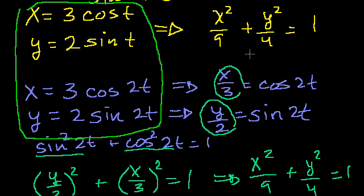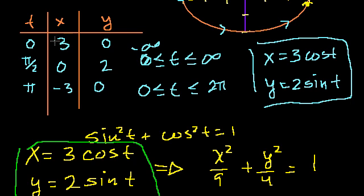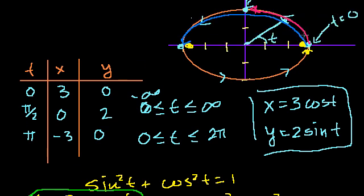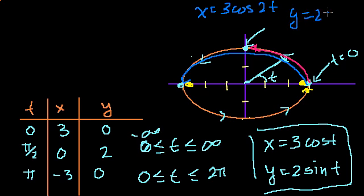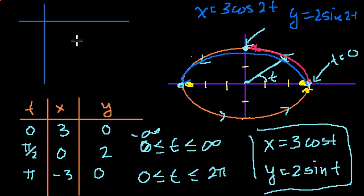So how are they different? In the previous video, we took the original equations and made a table, plotting the points hit as you go around the ellipse. Let's do the same thing for our new set. Let me write the two equations: x is equal to 3 cosine of 2t and y is equal to 2 sine of 2t. Let me make a little table with t, x, and y, and pick the same values of t: 0, pi over 2, and pi.